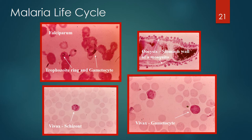The lower left picture demonstrates a schizont of vivax loaded with little dots called merozoites. When the schizont ruptures, these merozoites disseminate into the bloodstream with each one infecting another red blood cell. The lower right picture shows a vivax gametocyte that is infectious for a mosquito. The upper right picture demonstrates oocysts along the stomach wall of a mosquito — these oocysts were invaded by gametocytes that will eventually develop into sporozoites infectious for humans.